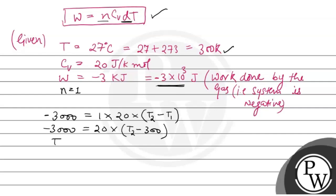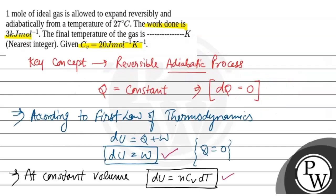Now, after solving this, we will get T2 equals 150 Kelvin, and this is our final answer. The final temperature of the gas is 150 Kelvin. Hope you understand it well. Best of luck.